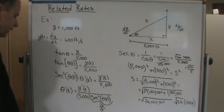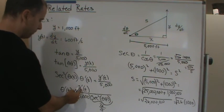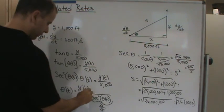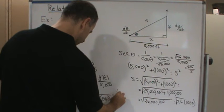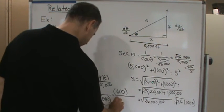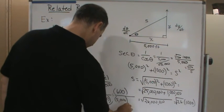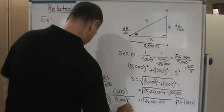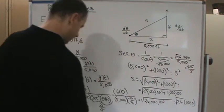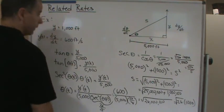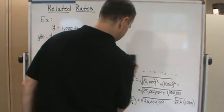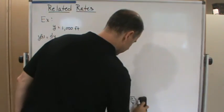Now we can plug in all the values. We know y-prime of t — that is dy/dt — is 600 feet per second. So the expression becomes 600 divided by 5,000, all divided by 26/25.